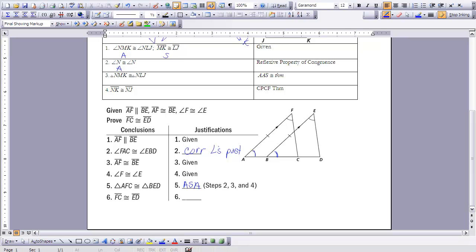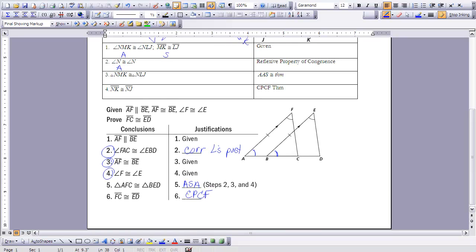So I can use angle, side, angle. Let's make sure those angles are all in my proof. I have a set of angles, a set of sides, and a set of angles. So yes, I can use ASA. And then I can say my parts are congruent using CPCF. This concludes our discussion of proofs in this lesson,